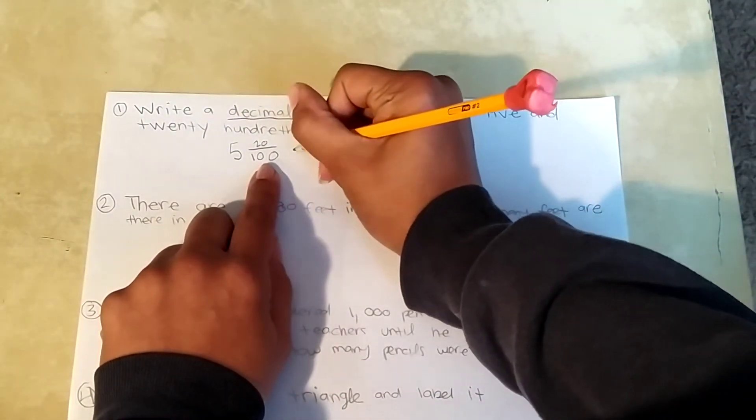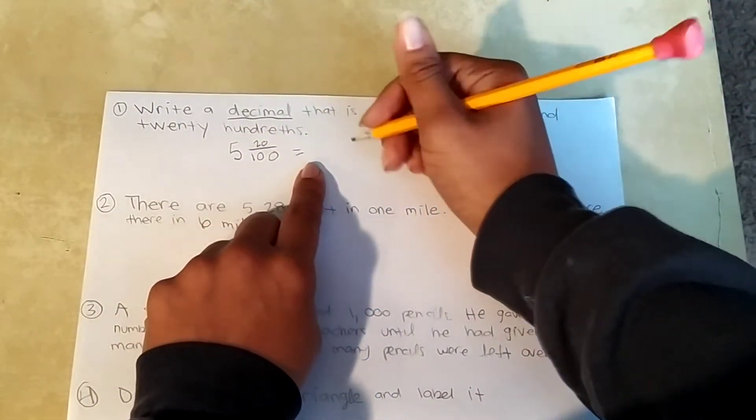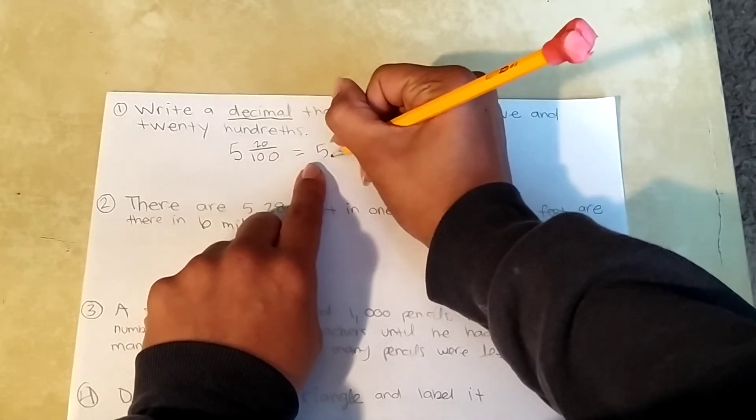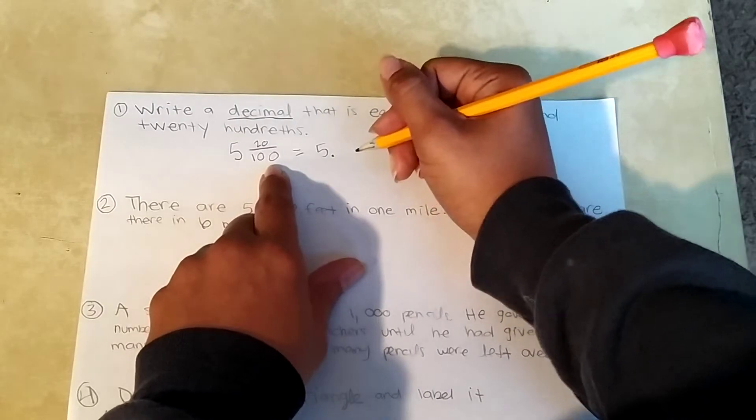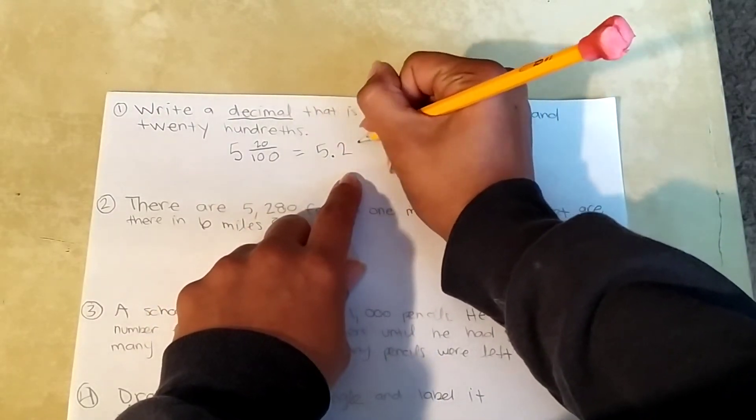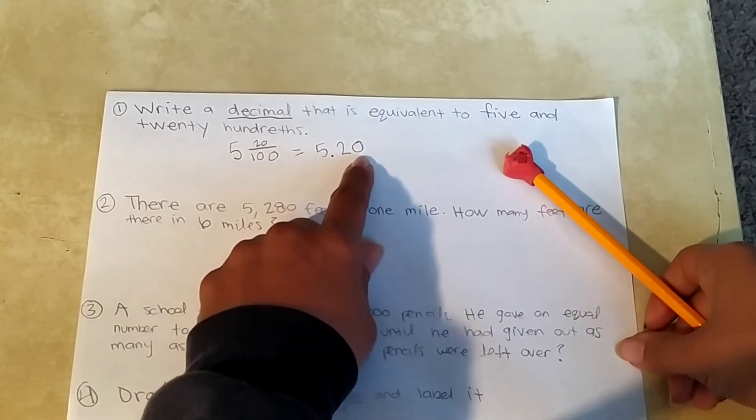So I'm going to put this as equal to, so there's our 5. So I put my 5 in front of the decimal place. Okay, 20 hundredths looks like this. Okay, all the way out to the hundredths place, right?